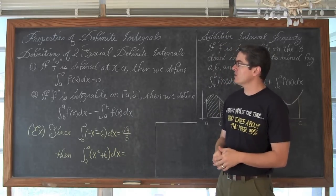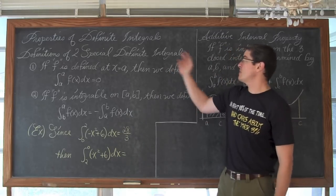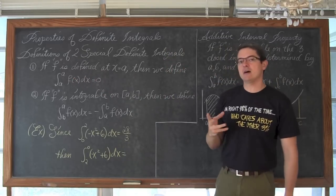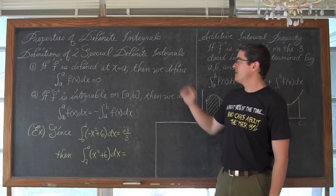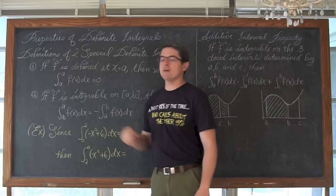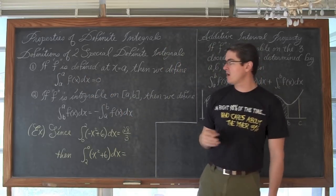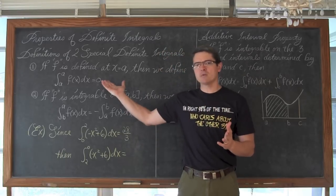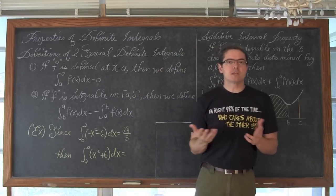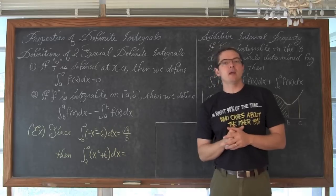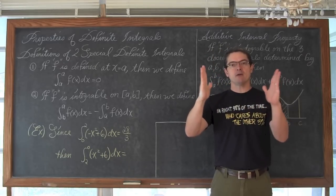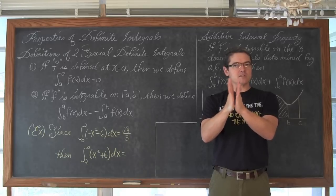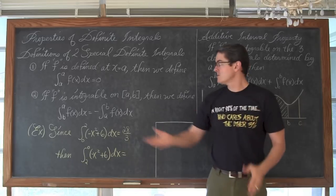Starting off we are going to look at the definition of two special definite integrals. If function f is defined at a value of a, x equals a, then we define the definite integral of f dx from a to a is equal to zero. Now you can use definite integrals for other things, but if you are doing it for area and you think of my lower and my upper bound being pushed together and being the same number, what is left in between? Nothing. So it is zero.